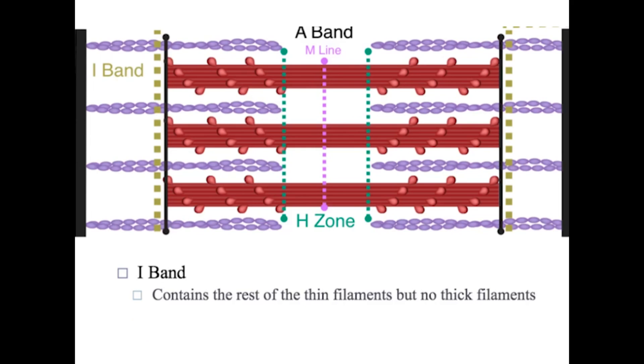Moving on, we have the I band. The I band is going to contain the rest of the thin filament, but no thick filament. If we look at the picture, we can see that it's a little bit too far up, but we can see that the I band starts here and is going to cross over to the one next to it and just pick up all the thin. It doesn't want the thick at all.